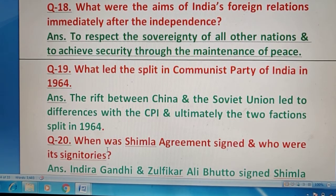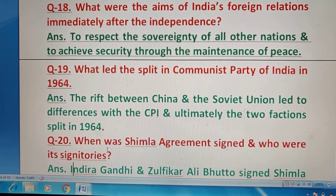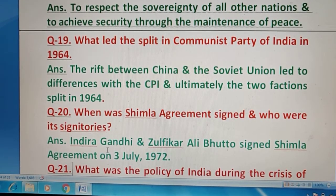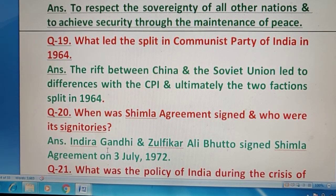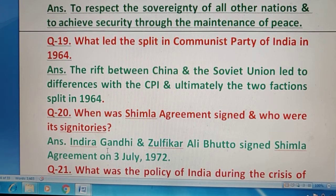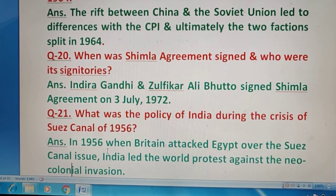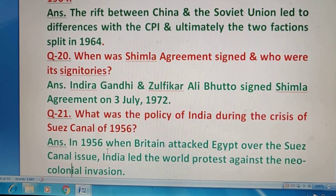Question 20 — किनके बीच agreement sign हुआ था? Right answer — Indira Gandhi और Zulfikar Ali Bhutto के बीच sign हुआ था, 3rd July 1972 को।